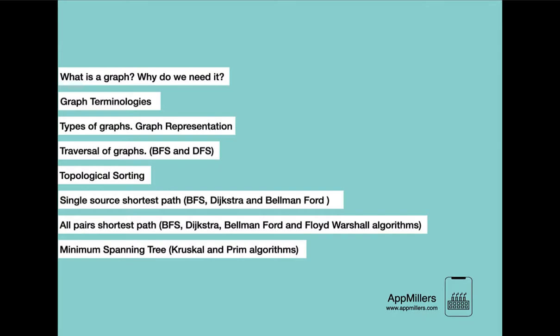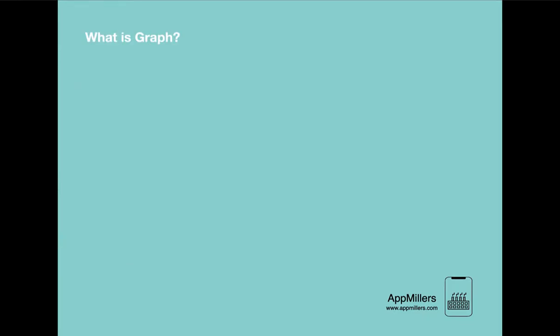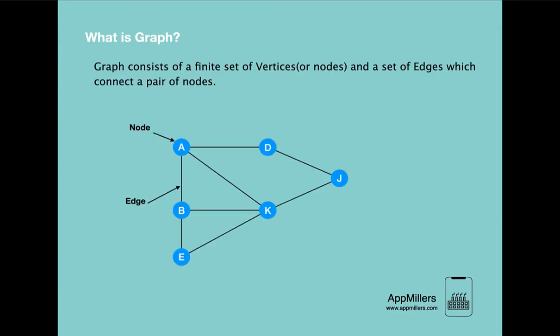So the first topic is what is a graph? A graph is a non-linear data structure consisting of nodes and edges. The nodes are sometimes also referred as vertices and the edges are lines or arcs that connect two nodes in the graph. More formally, a graph can be defined as consisting of a finite set of vertices or nodes and set of edges which connect pairs of nodes.